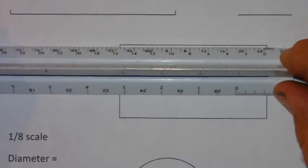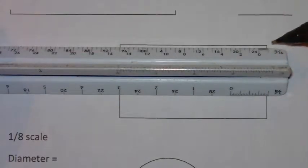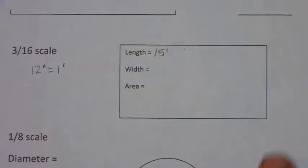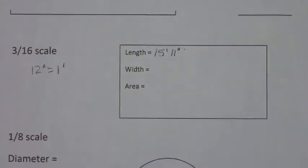Now you take the scale, shift to the left, and then count the number of increments to the right of the zero. We have eleven increments. Therefore this line will be fifteen feet, eleven inches long.